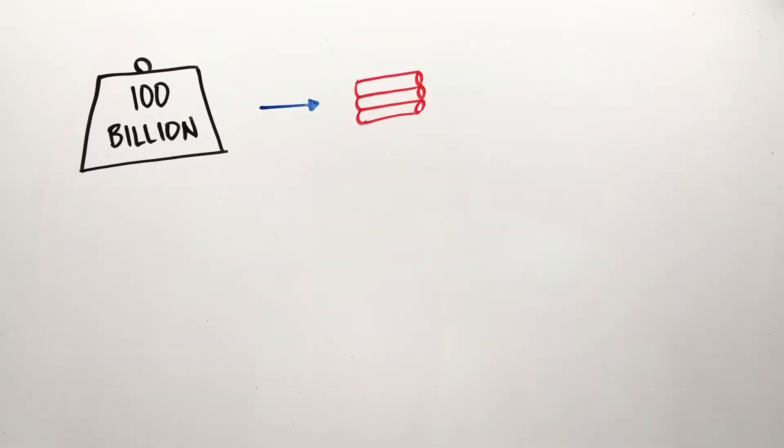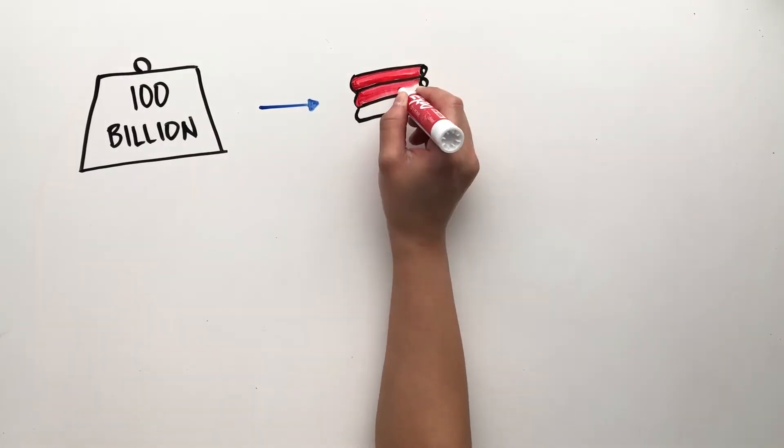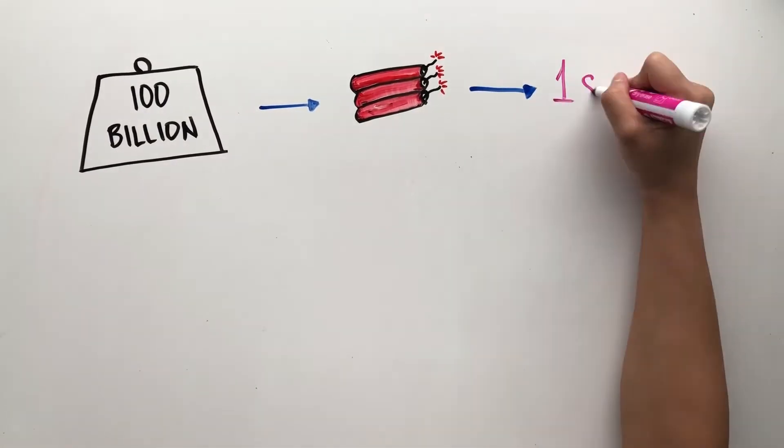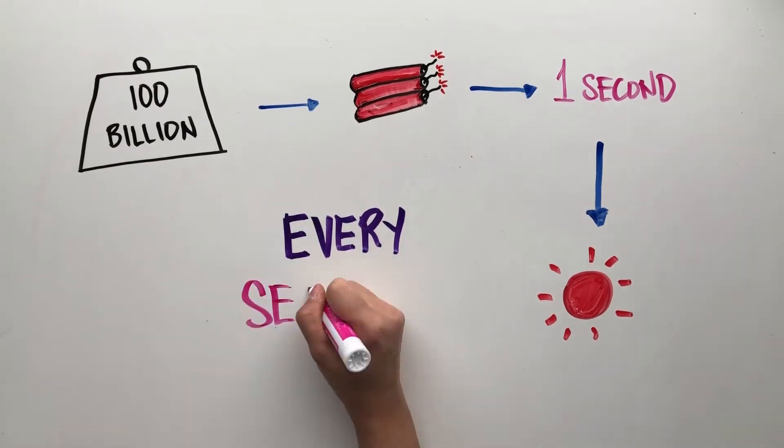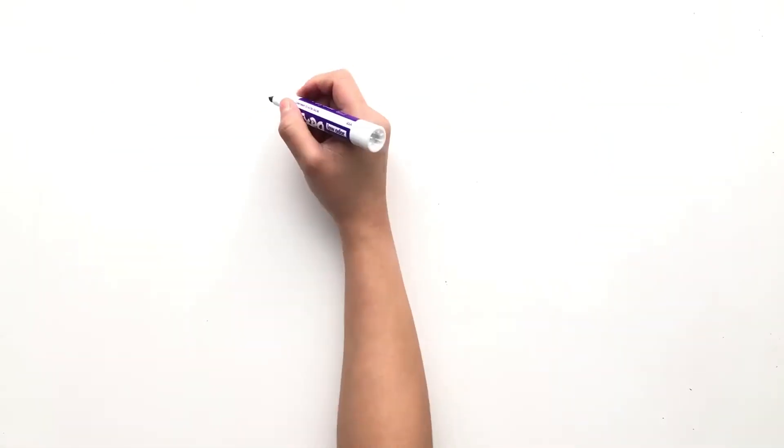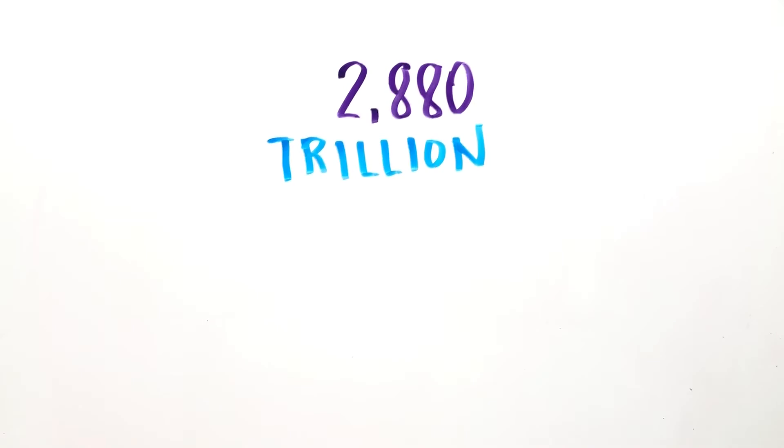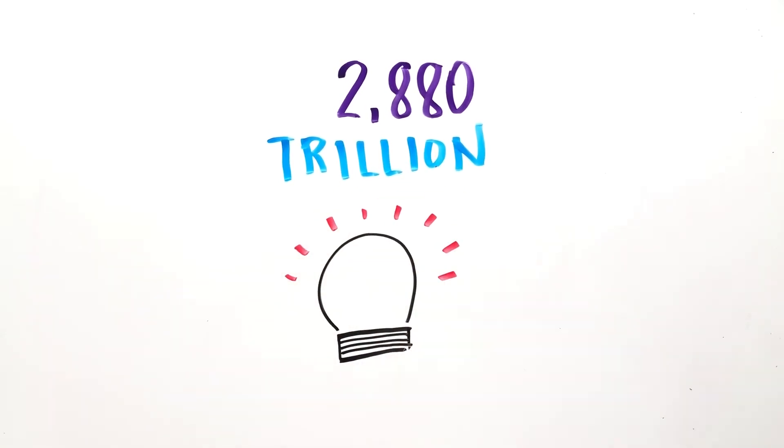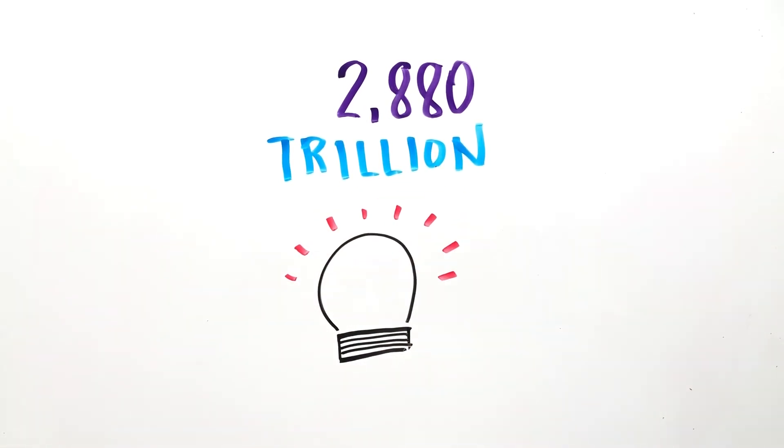100 billion tons of dynamite would have to be detonated every second to match the energy produced by the Sun. Every second. Its energy is enough to power 2,880 trillion light bulbs. That is more than enough power to give each person on Earth a light bulb that will shine for the rest of their lives.